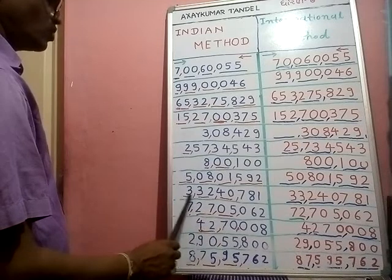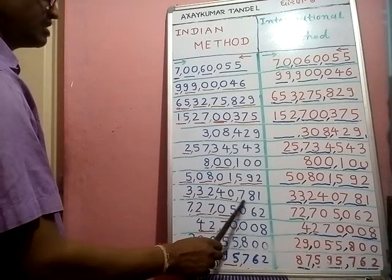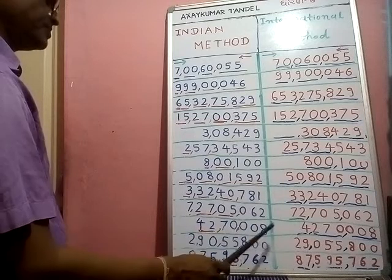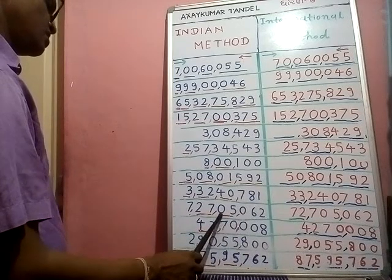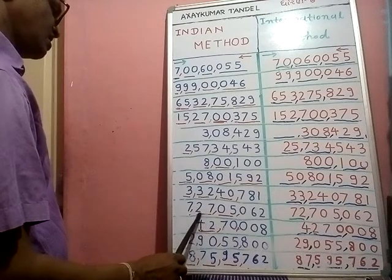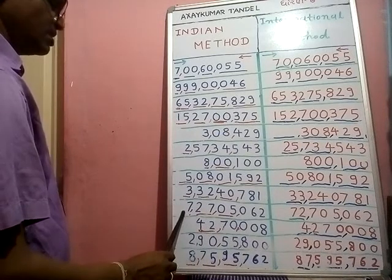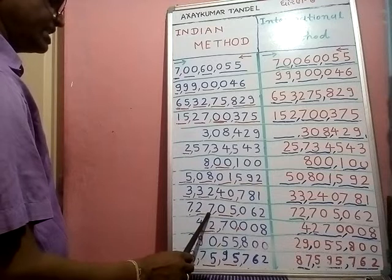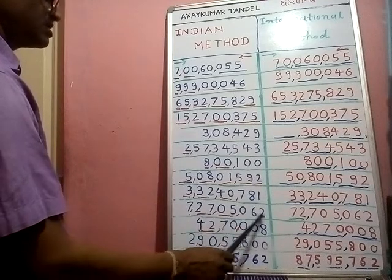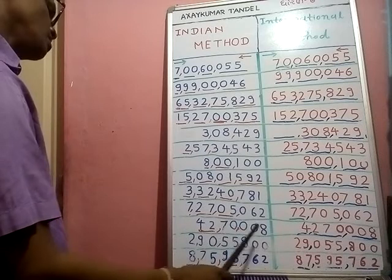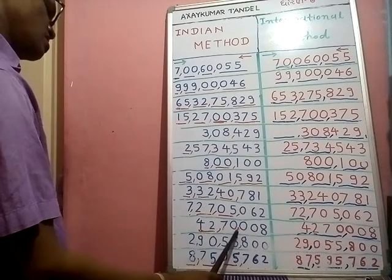We read: three crore thirty-two lakh forty thousand seven hundred eighty-one. Next one — ones, tens, hundreds, thousands, ten thousands, lakhs, ten lakhs, crores. We read: seven crore twenty-seven lakh five thousand sixty-two.